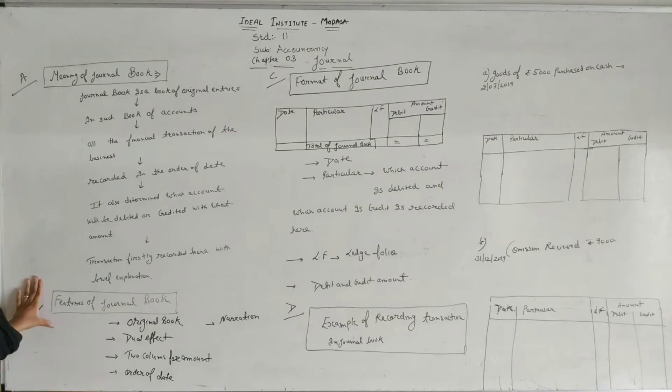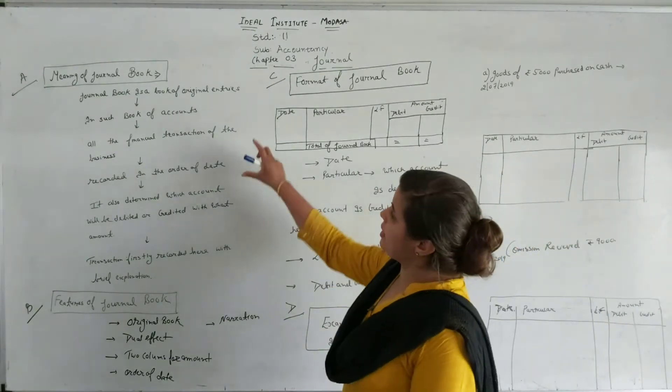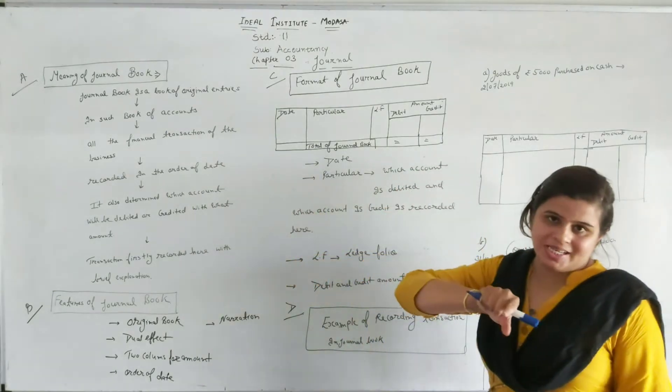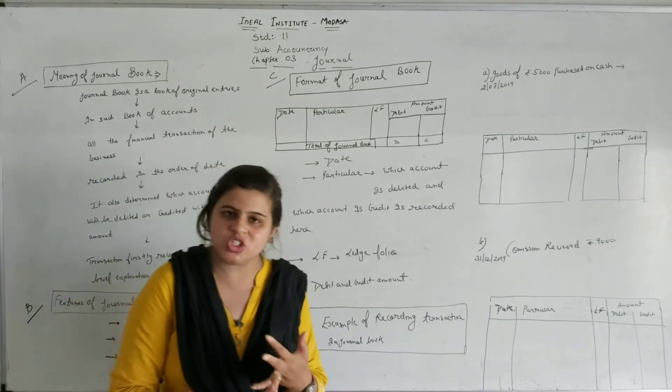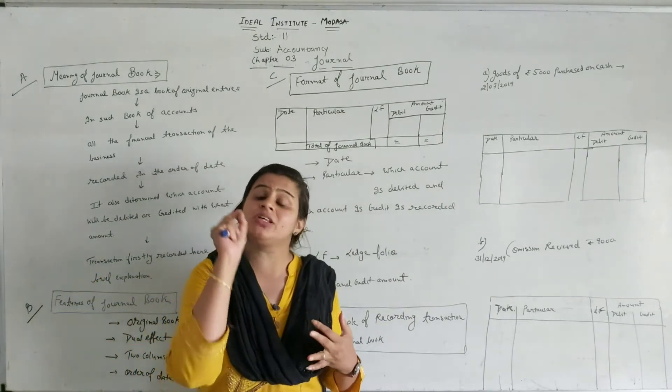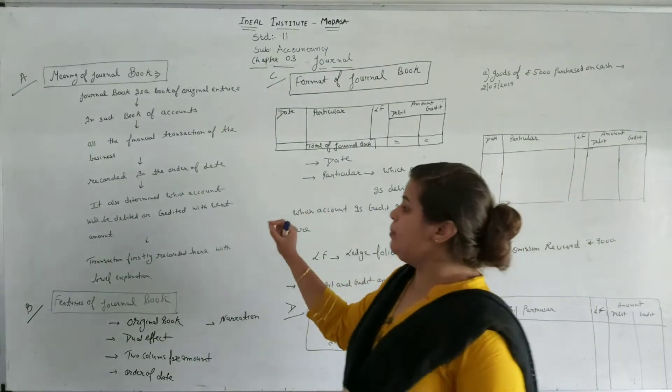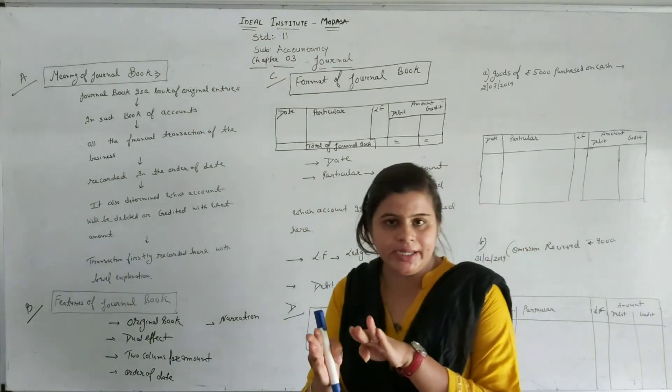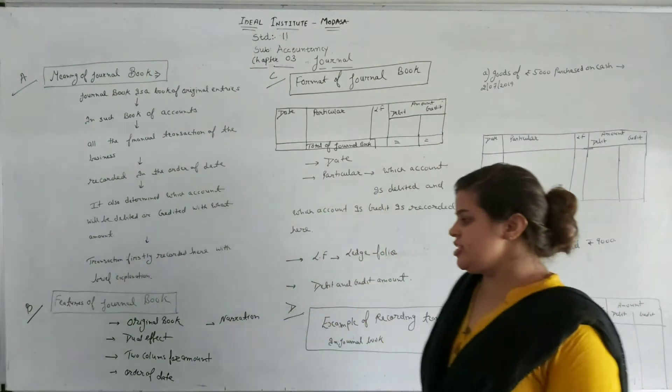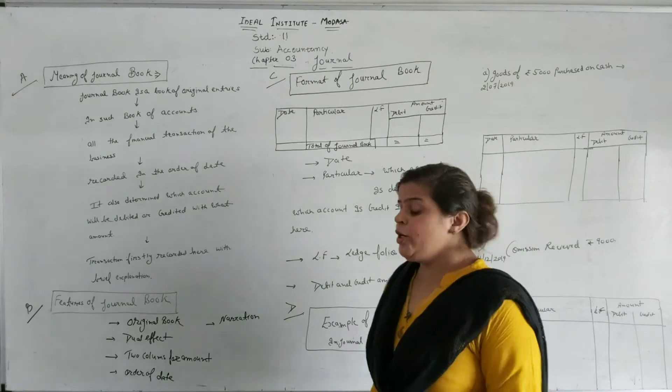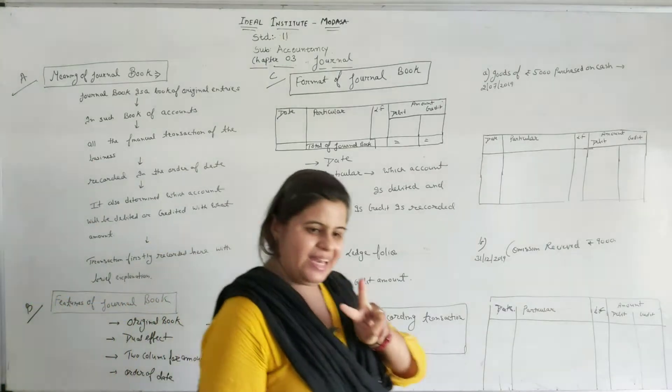The second topic is the features of journal book. What are these features? If you don't want to remember such features, we can obtain features from the meaning. For example, journal book is an original book. Second, journal book is an original book where the first time transaction is recorded with brief explanation. Journal book is helpful to see which account you want to debit, credit with the amount. Some of the features are: first, it is the original book. Second, dual effect. We discussed each transaction has two effects, two columns for amount. The first effect is debit. The second effect is credit.